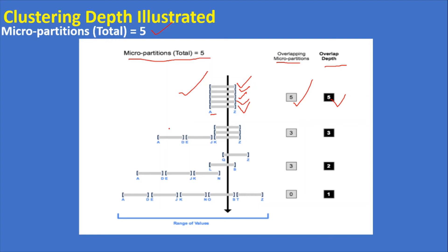After reclustering, A to D values are stored in a single partition, D to J in another, and K to Z values overlap across three partitions. So overlapping micro-partitions are three and overlap depth is three. After changing the cluster key and reclustering again, overlapping micro-partitions remain three but the depth reduces to only two, based on how the data is distributed.